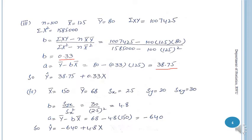The fourth part: n = 150, ȳ = 68, sx = 2.5, sy = 20, sxy = 30. The information given leads us to select the formula b = sxy / sx². After substitution and calculation, b = 4.8. Then a = ȳ − b·x̄ gives a = −640. So ŷ = −640 + 4.8x.